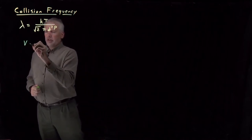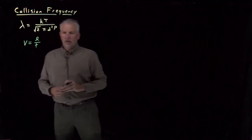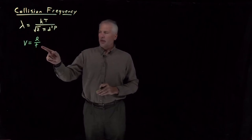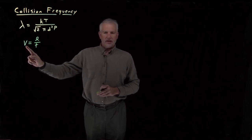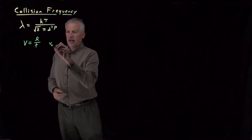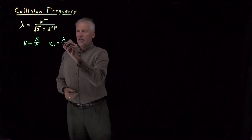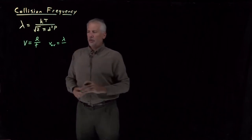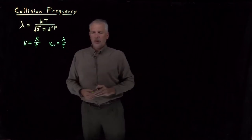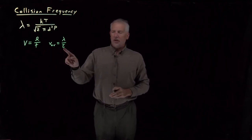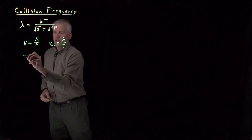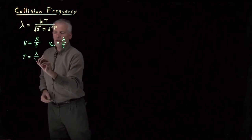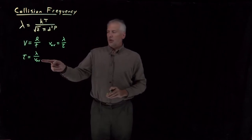We can answer that relatively easily. We know that velocity is distance traveled per unit time. We know the distance traveled by a molecule on average between collisions, and we also know the average velocity of molecules in the gas phase. The average velocity and the mean free path are related to each other via the time between collisions. I've written that time here as tau — tau is the average time between collisions, which we can call the collision time. Rearranging: tau equals mean free path divided by average velocity.